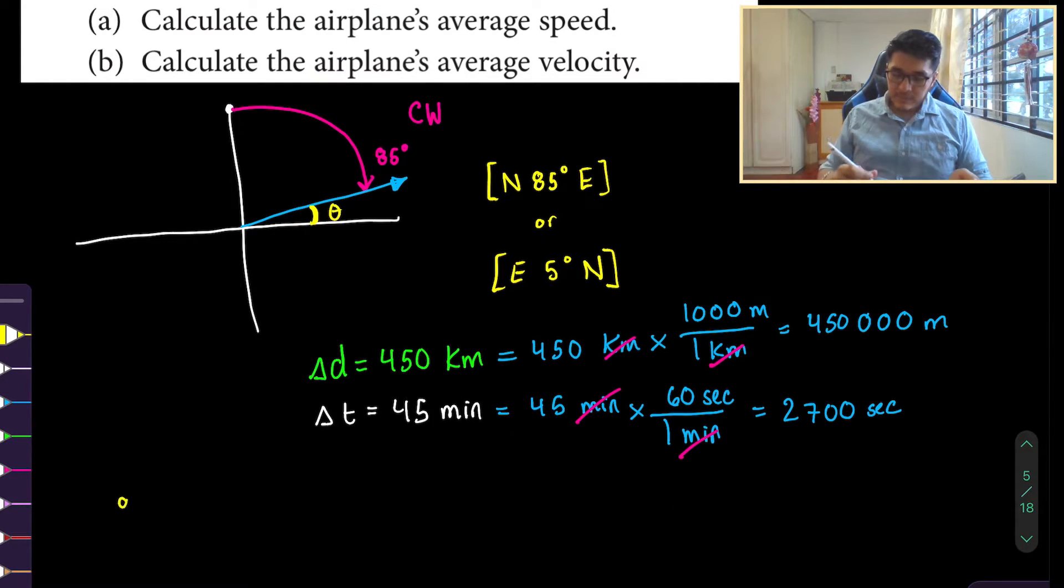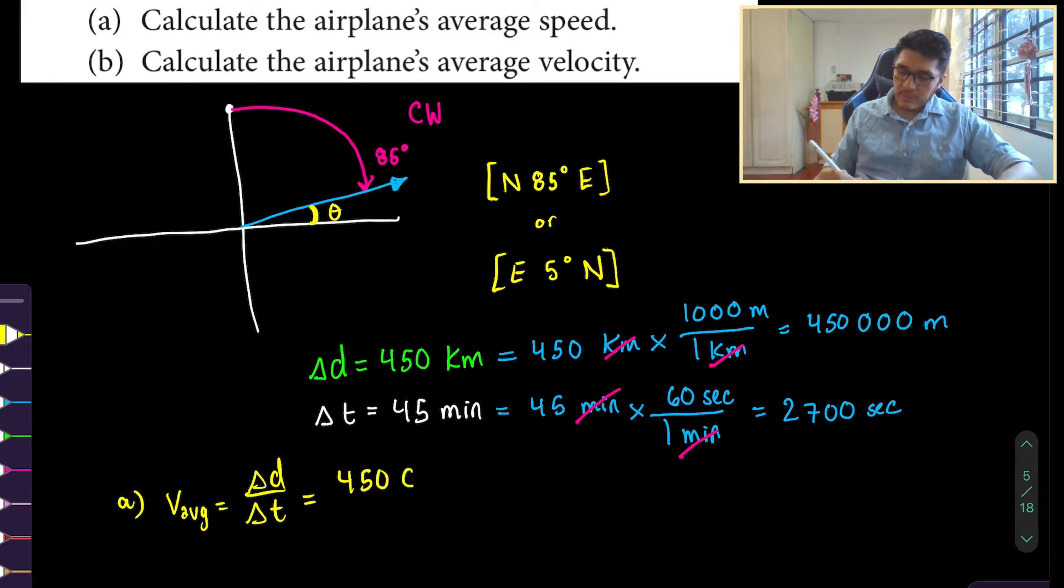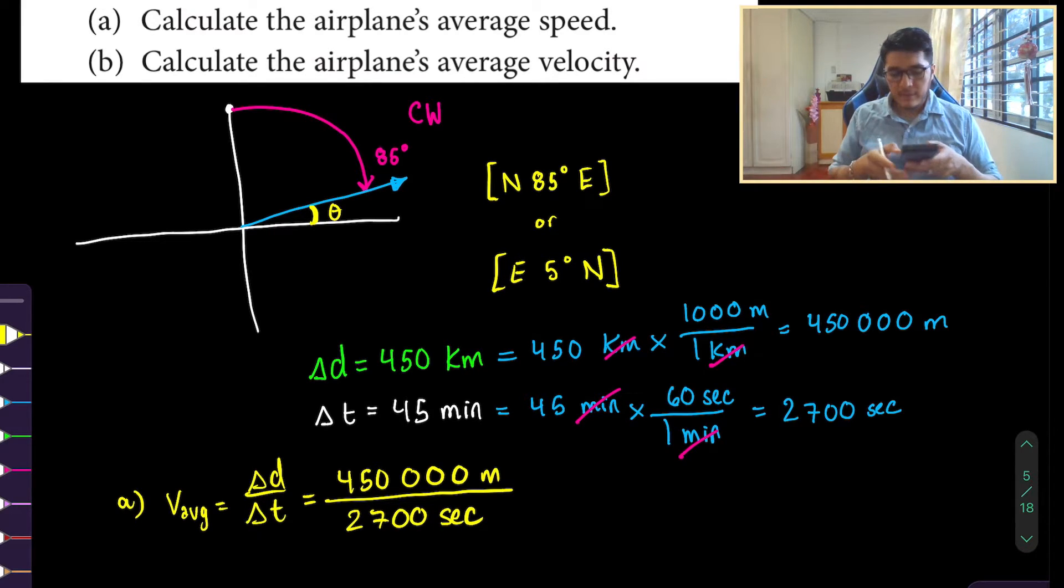So to finally answer the questions that they're asking us. For part A, they want us to calculate the airplane's average speed. So the scalar part. Total distance over the change in time. So 450,000 meters over 2,700 seconds. So approximately, we get 167 meters per second. So this is the average speed, which is the scalar part.